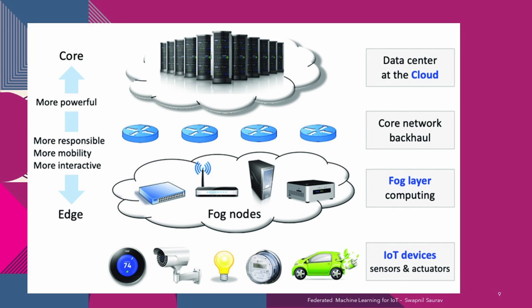The fog layer is an intermediate layer between the edge and the cloud layers, consisting of fog nodes or gateways. Fog nodes are more powerful computational devices that can perform more complex tasks compared to edge devices. These nodes collect data from multiple edge devices and perform aggregation, filtering and additional pre-processing before forwarding the data to the cloud layer. The fog layer is responsible for reducing network congestion and filtering out redundant or irrelevant data. In federated machine learning, fog nodes can also participate in training machine learning models in a distributed manner, collaborating with other nodes.